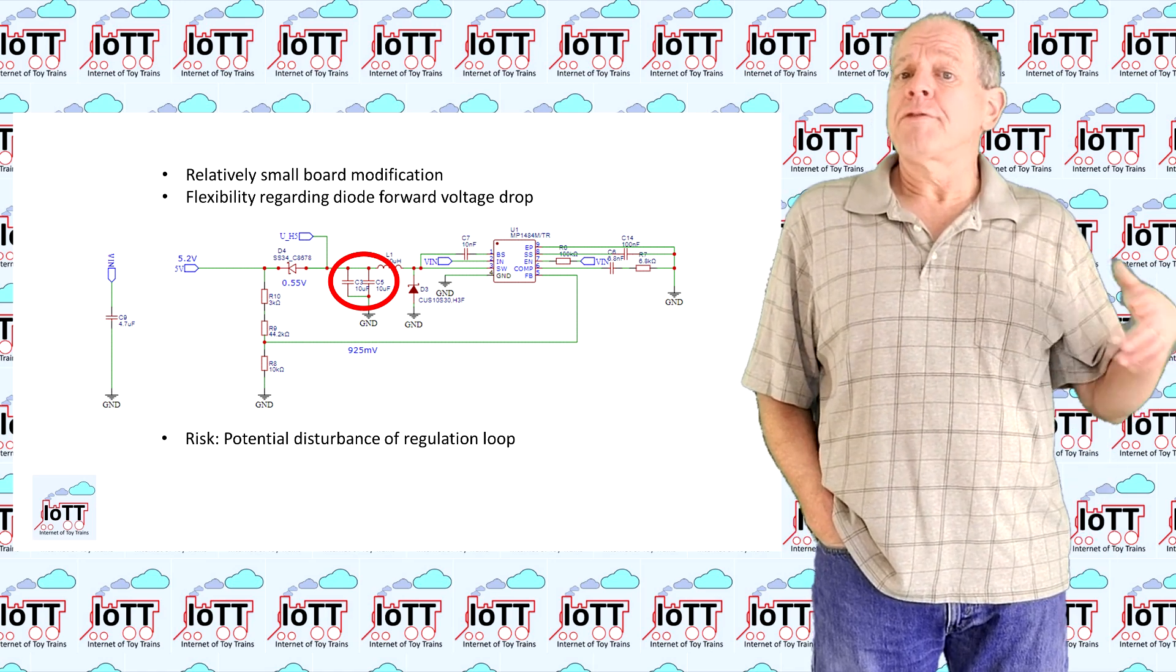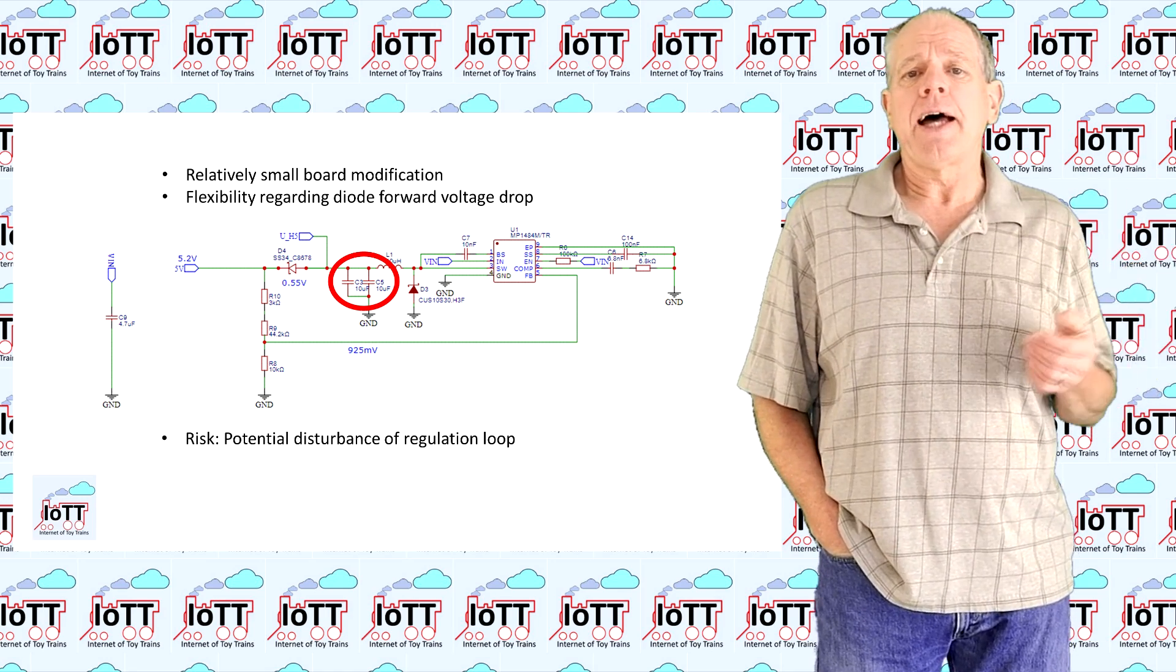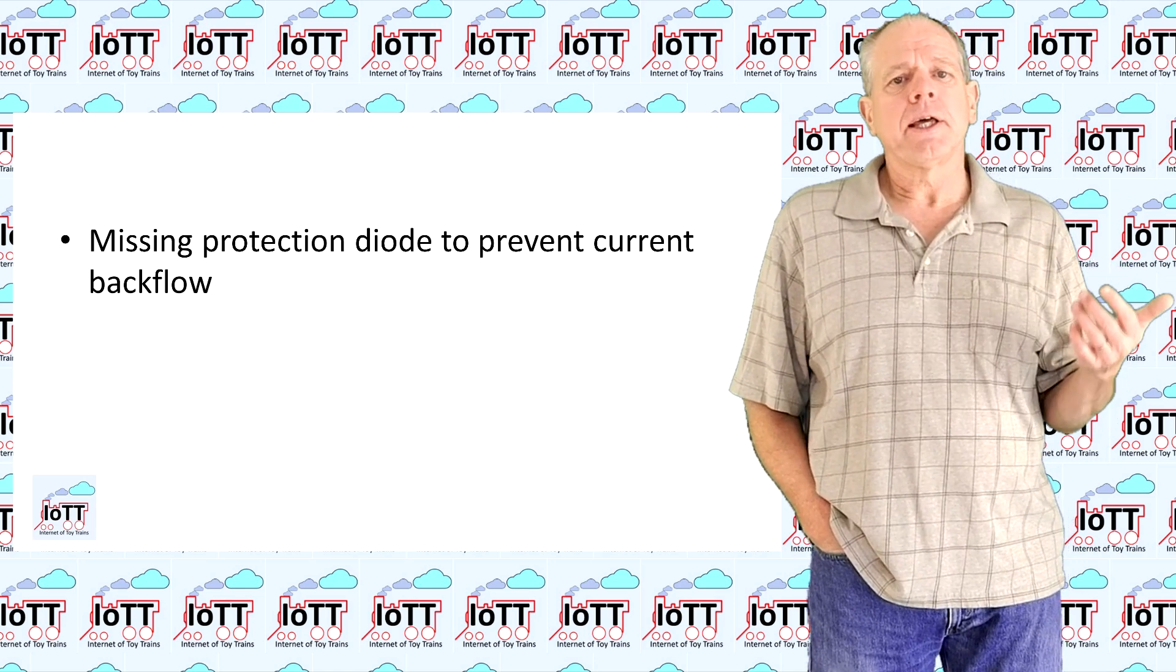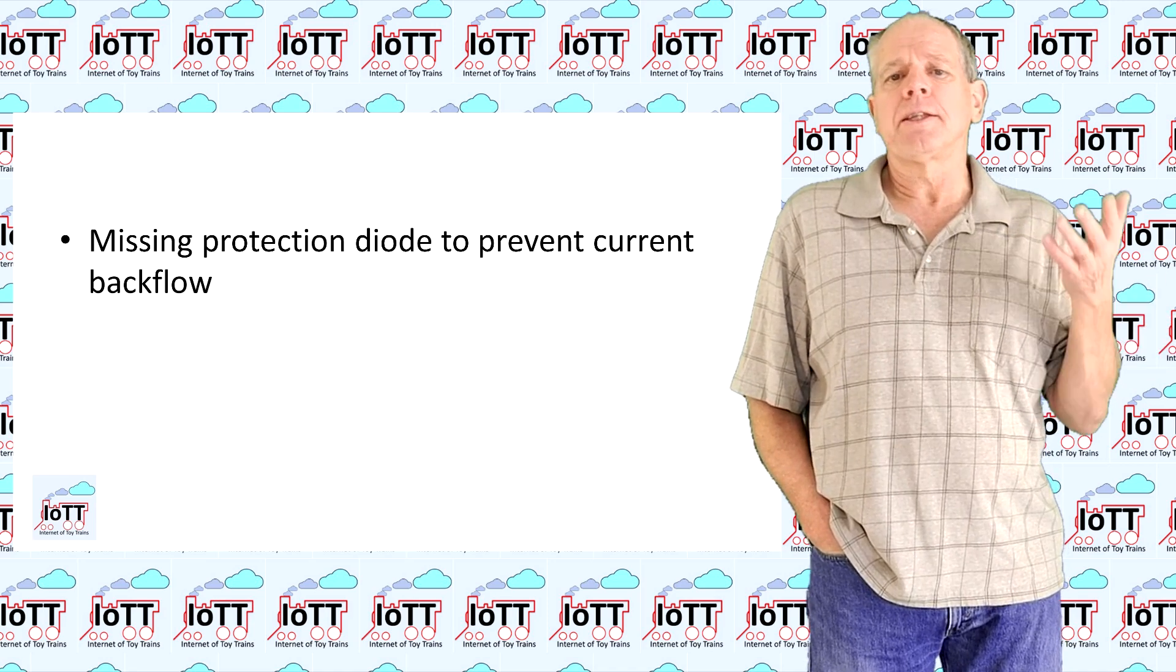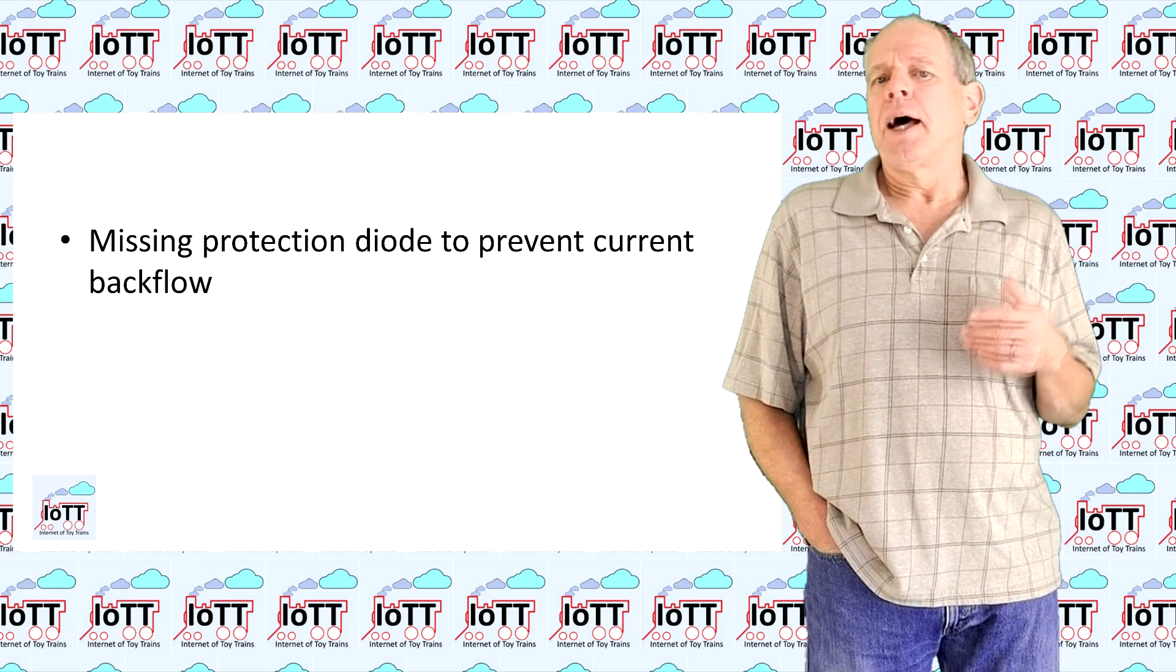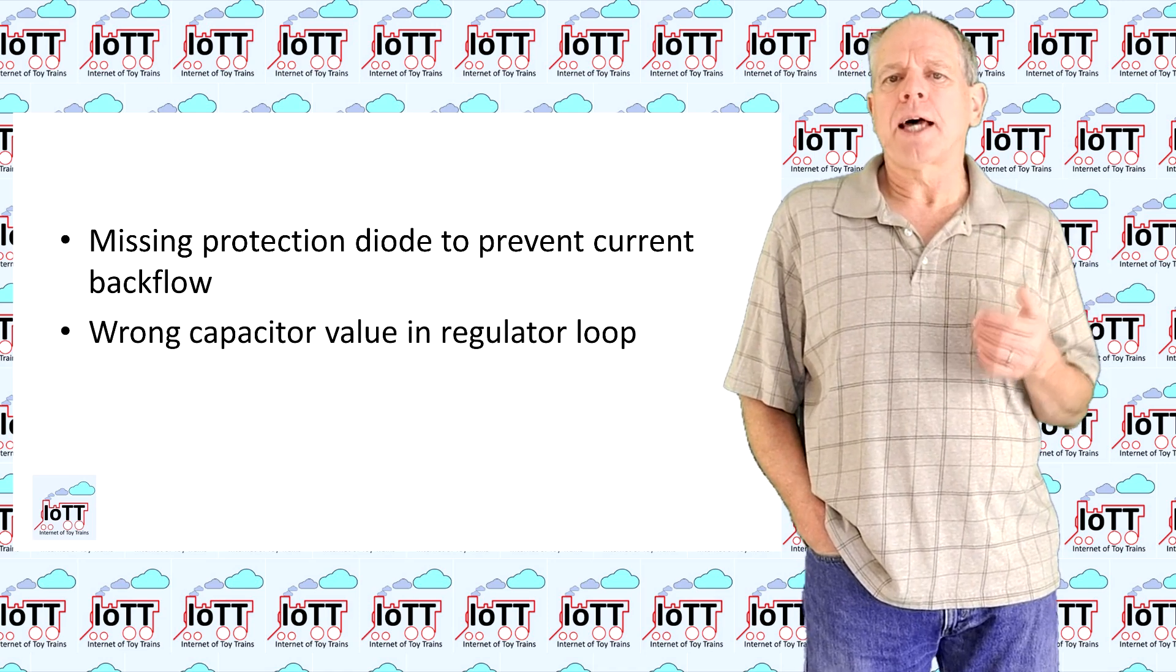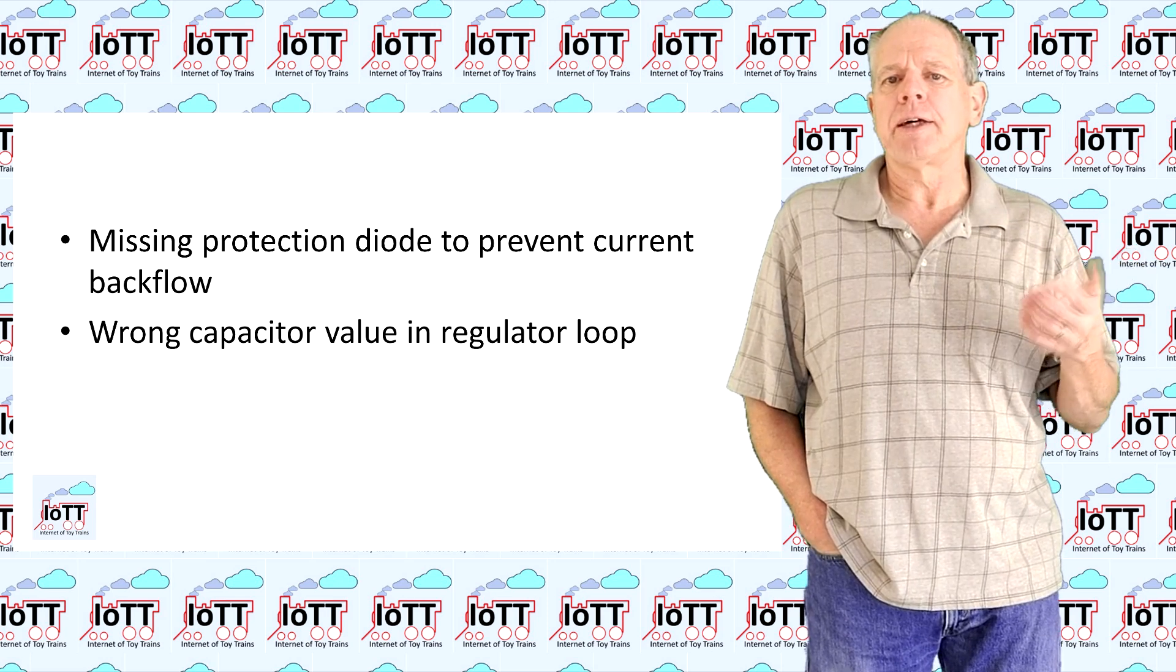So after quite some testing and three Arduinos later, I had clearly identified two root causes. First, the missing protection diode that is needed to prevent the DC DC converter to draw a high amount of current during the start-up phase. And second, a wrong capacitor value which prevented the start-up cycle from happening in case the input voltage was raised very slowly.